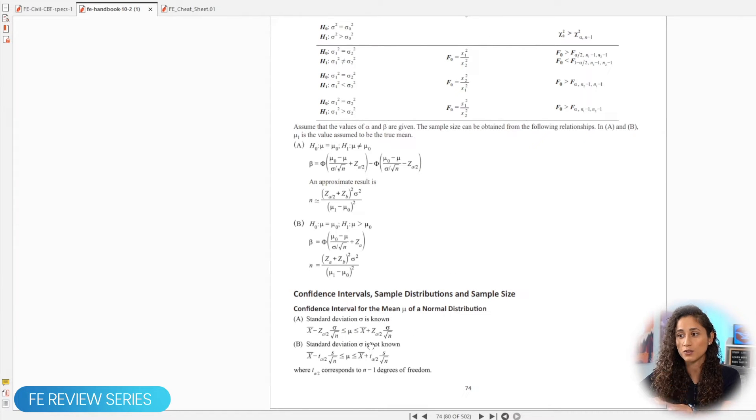So if we go to the reference handbook, here you guys will see that we have two equations for the confidence interval. The first equation, this is the Z distribution and then here we have the T distribution. Now, the question is, when do we use the Z distribution and when do we use the T distribution?